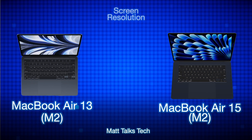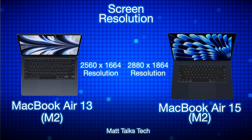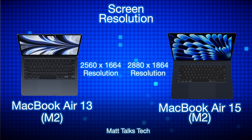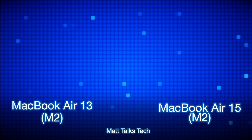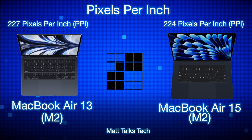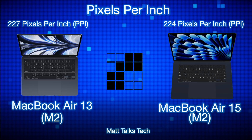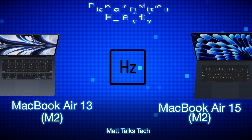For screen resolution, there is a difference. The 13-inch comes in at 2560 by 1664, while the 15-inch MacBook Air has a resolution of 2880 by 1864. In pixels per inch, that's 227 PPI on the 13-inch versus 224 PPI on the 15-inch — about three pixels per inch less. However, since you'd hold the 15-inch slightly further away, you'd likely perceive a clearer picture on that larger display.